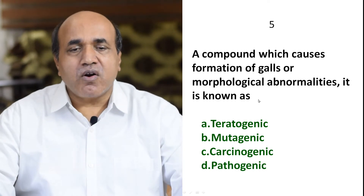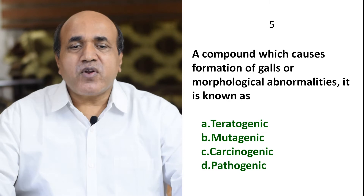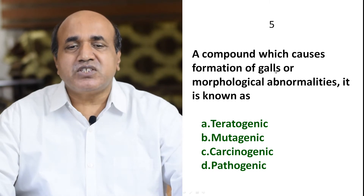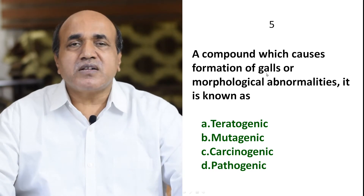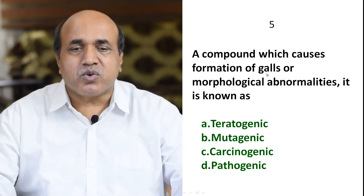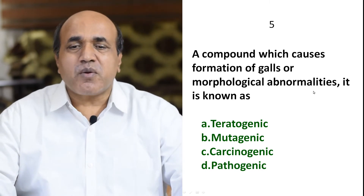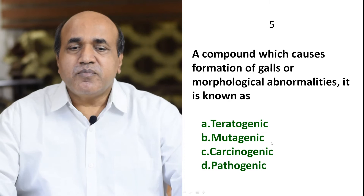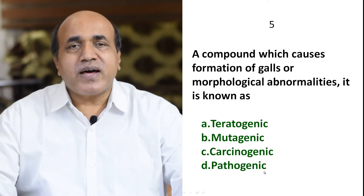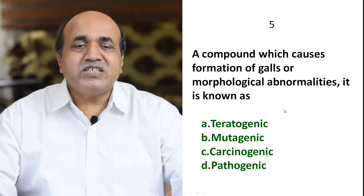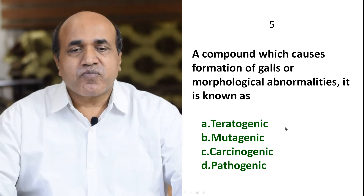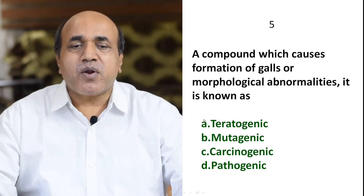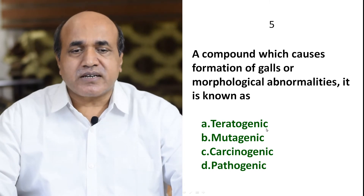Question 5: A compound which causes formation of galls or morphological abnormality — physical changes. Mutagenic is gene-related, carcinogenic is cancer-related, pathogenic is virus or bacteria-related. So A is the correct answer: teratogenic. Morphological abnormality is related to teratogenic. A is the correct answer.